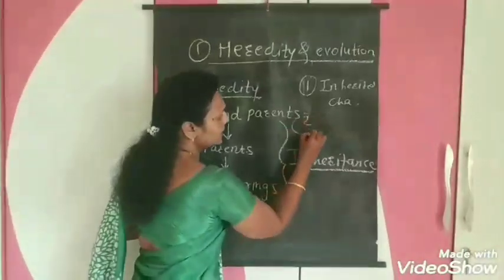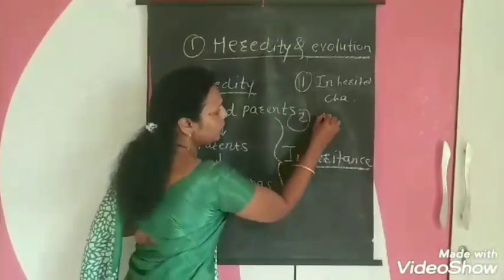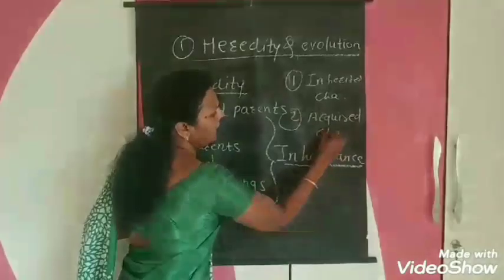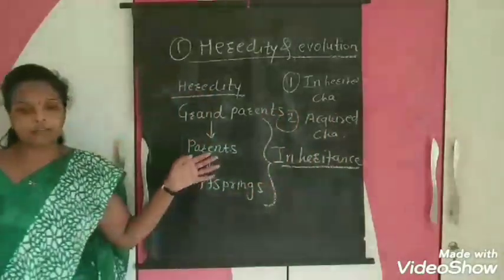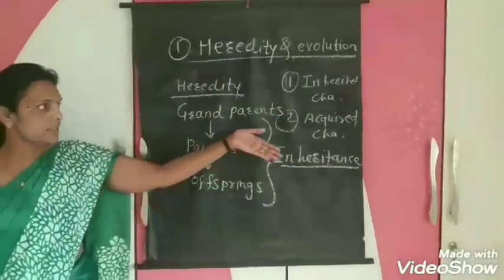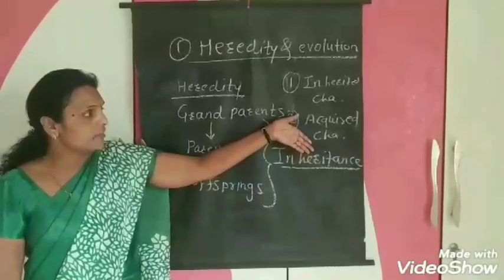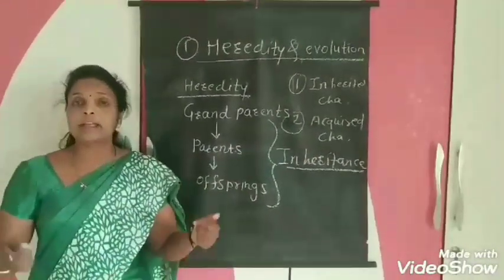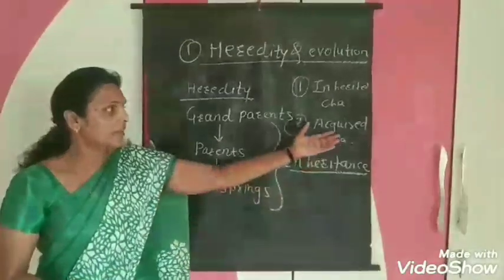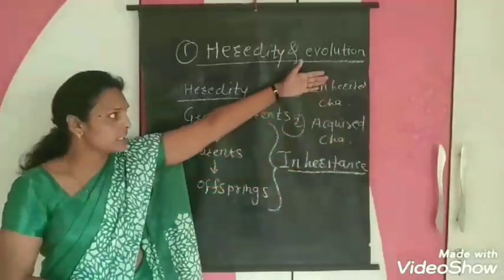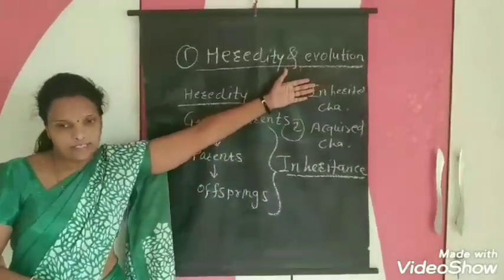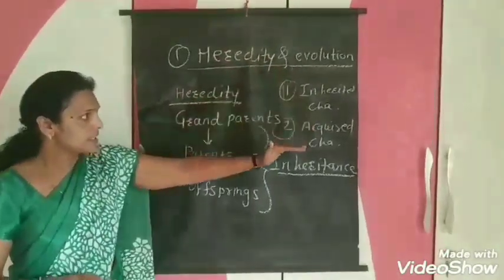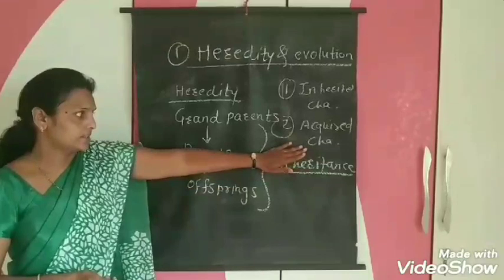The second type is the acquired character. Some characters are acquired by human beings through doing exercise or developing muscles. These are acquired characters — they do not come from the parents. So there are two types of characters: inherited characters and acquired characters.